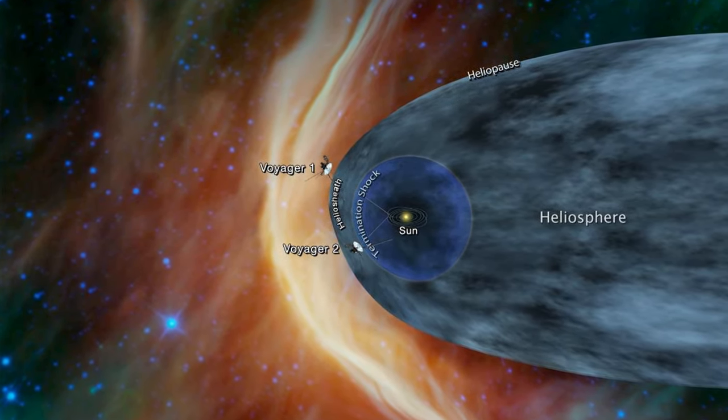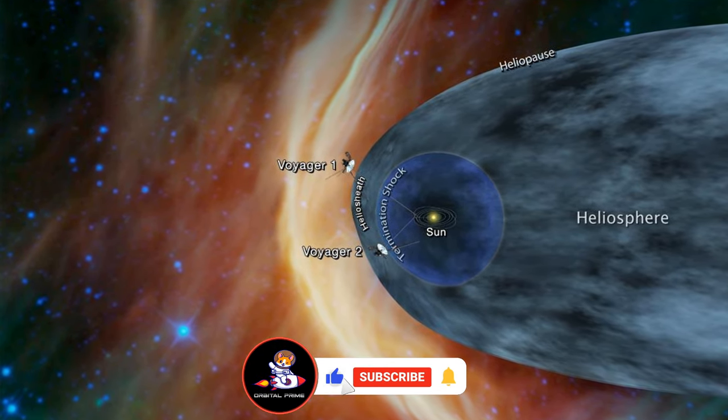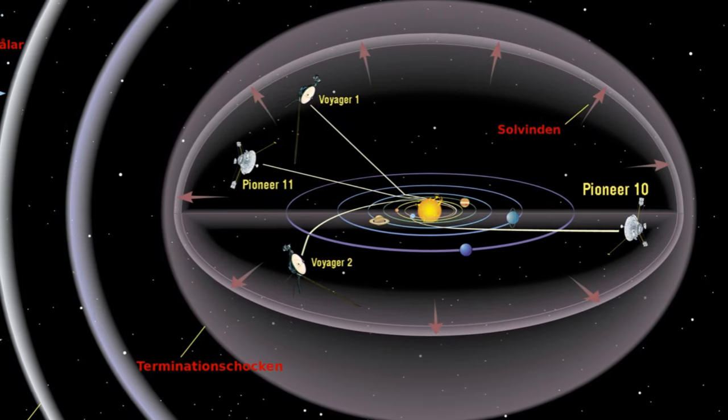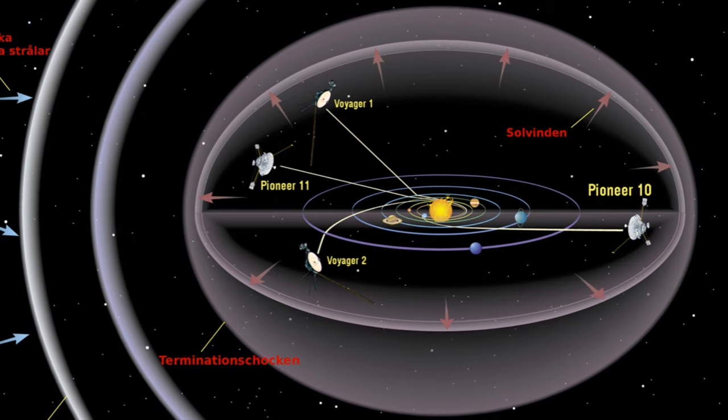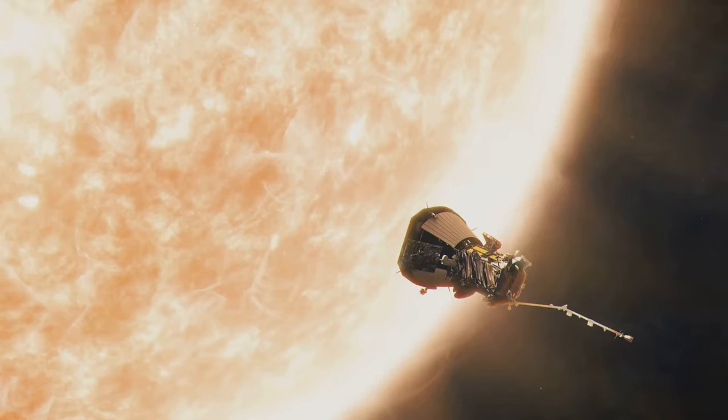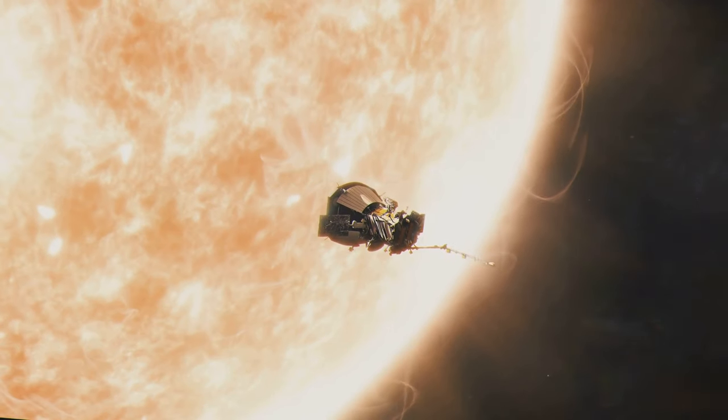At the boundary of this cosmic frontier lies the termination shock, where the solar wind's supersonic journey slows to a subsonic crawl, marking the beginning of the heliosheath and the heliopause. These are the regions where the solar wind meets the interstellar medium. You can imagine it like a boundary that is mostly empty space between different star systems in the galaxy.